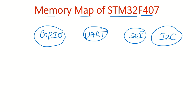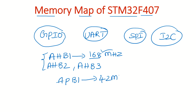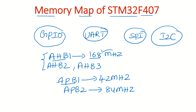There are several buses in the STM32 F407 board. The first one is the AHB1 bus, with a maximum speed of 168 MHz. The second is the AHB2 bus and the third is the AHB3 bus — all AHB buses have a maximum speed of 168 MHz, which is the maximum speed of the STM32 F407 board. There are also two more buses: APB1, with a maximum speed of 42 MHz, and APB2, with a maximum speed of 84 MHz. AHB stands for Advanced High-Performance Bus, and APB stands for Advanced Peripheral Bus.